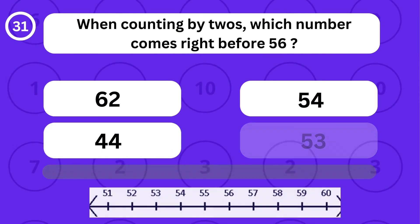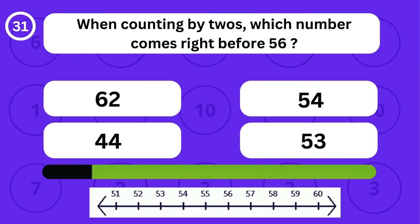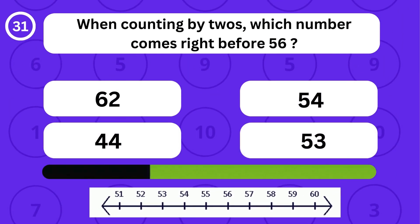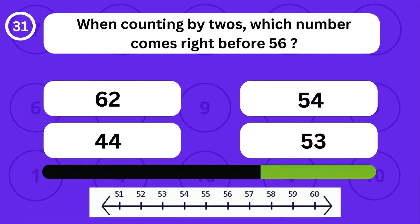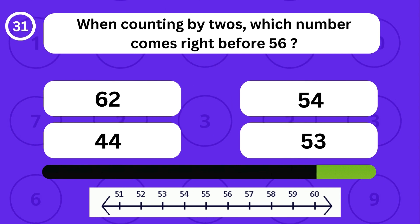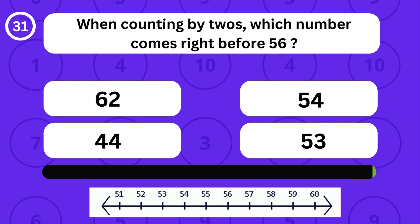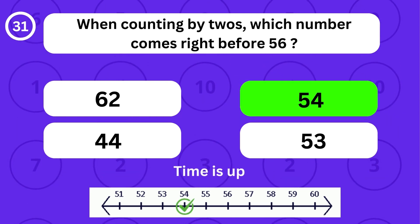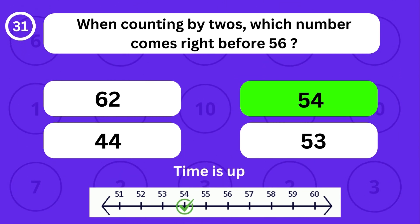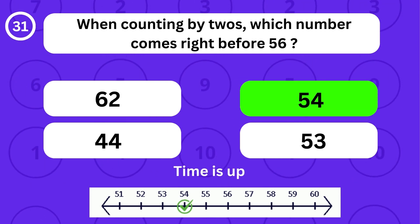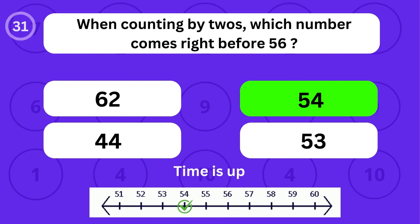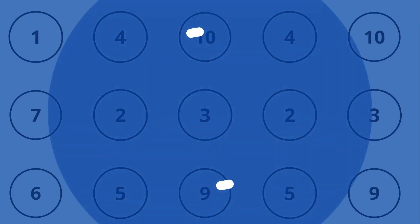When counting by twos, which number comes right before 56? When counting by twos, the number 54 comes right before 56.